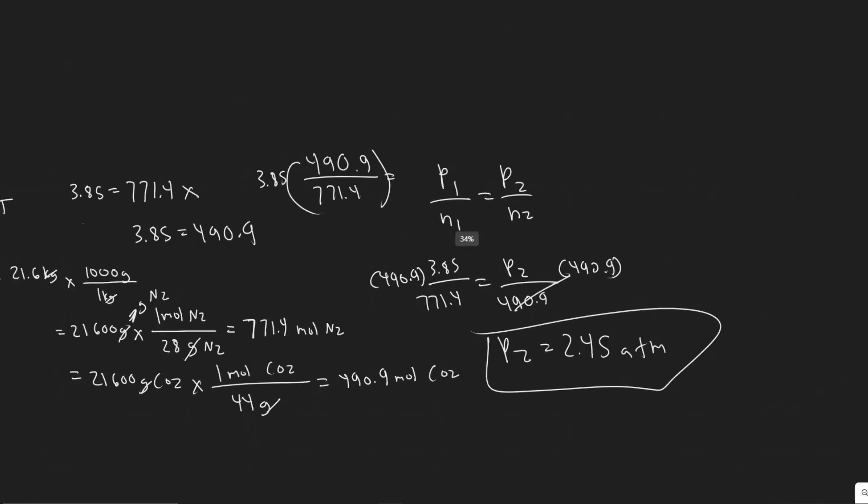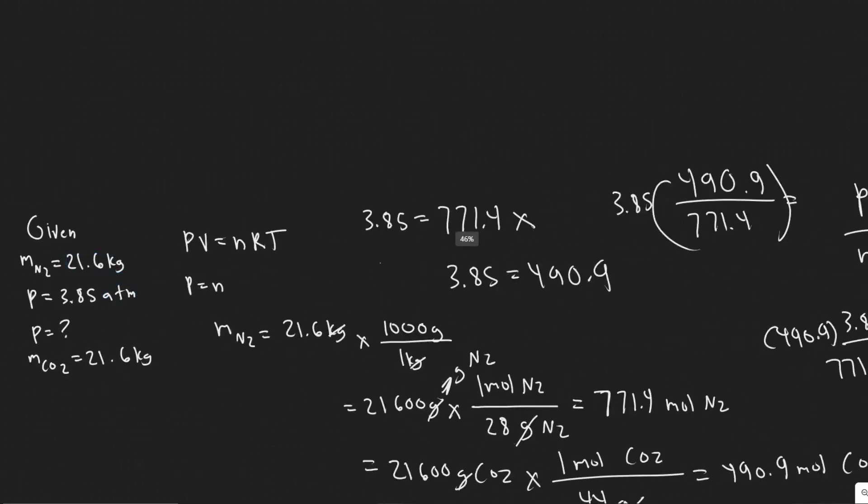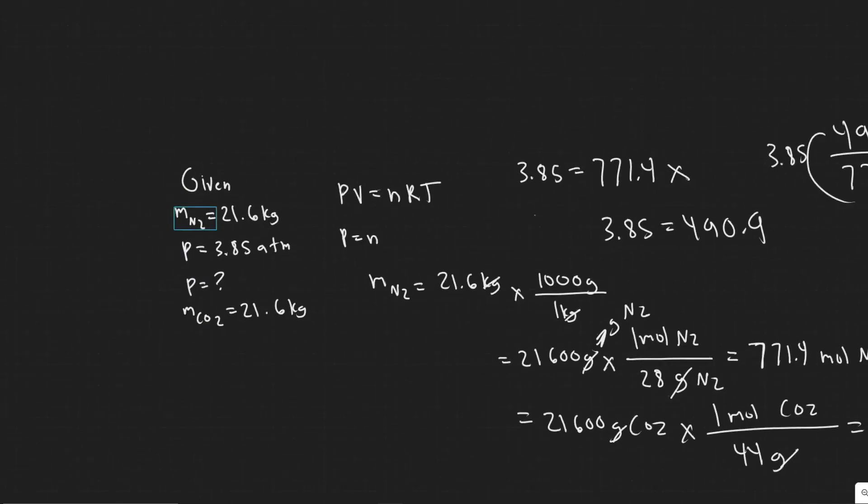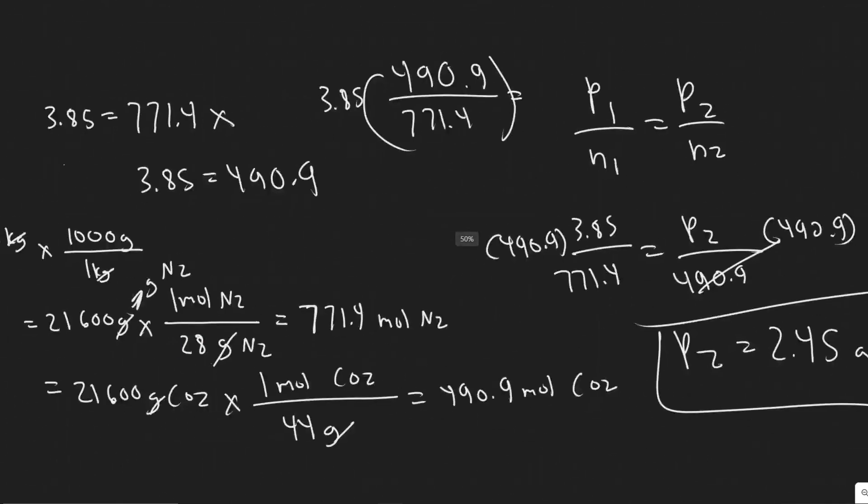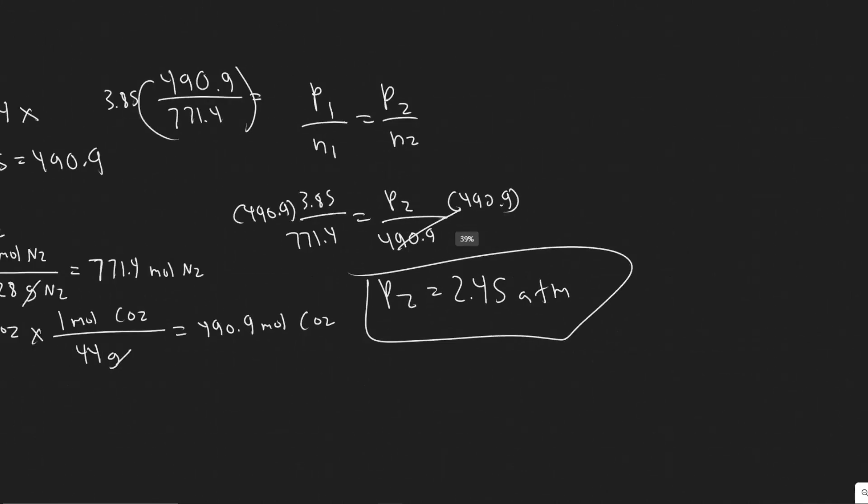But yeah, so 2.45 atmospheres, that's going to be the pressure if we change from 21.6 kg of N2 to CO2. So 2.45 atmospheres, that's going to be your answer. And hopefully you found this video useful.